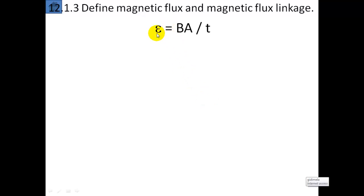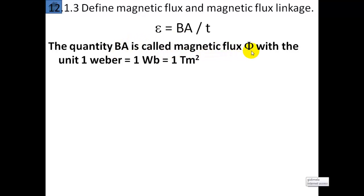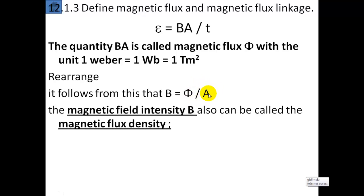We remember that it's BA divided by t. BA is the flux, the magnetic flux phi. If we rearrange this, we know that B equals flux divided by A. Remember, flux equals BA, or B equals the flux phi divided by A. It follows that the magnetic field strength B equals how much flux is concentrated over a certain area. So the magnetic field intensity B can also be called the magnetic flux density.